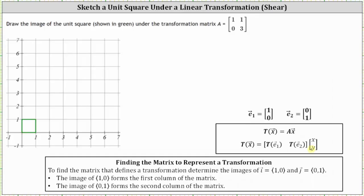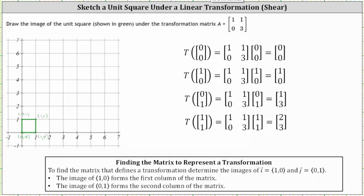So one way would be to find the ordered pairs for each of the vertices of the square, which I've already done here, and then find the transformation of each of these points by determining the product of matrix A and the point as a two-by-one column matrix.